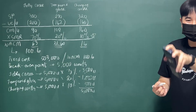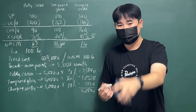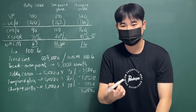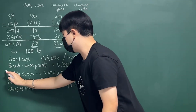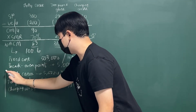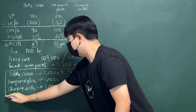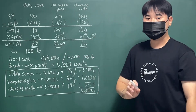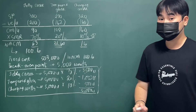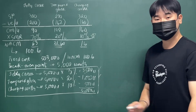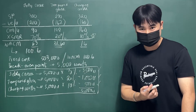The problem asks you to calculate the break-even point in units and in pesos. For the units, in order to break even, the entity should sell 3,500 units of jelly cases, 1,000 units of tempered glass, and 500 units of charging cords.